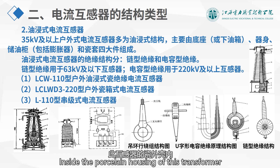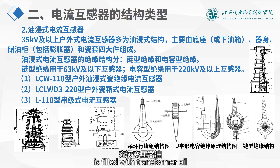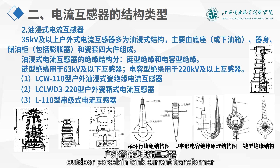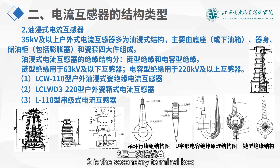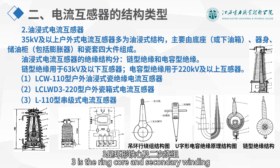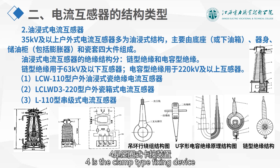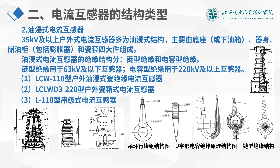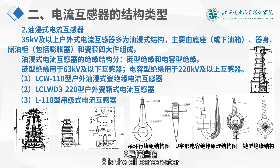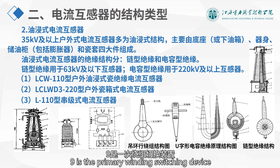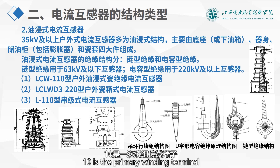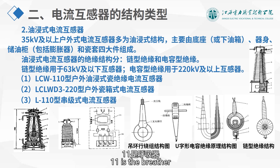Inside the porcelain housing, this transformer is filled with transformer oil and fixed on a metal carriage. The LCLWD3-220 type outdoor porcelain tank current transformer: 1 is the oil tank, 2 is the secondary terminal box, 3 is the ring core and secondary winding, 4 is the clamp type fixing device, 5 is the primary winding, 6 is the porcelain bushing, 7 is the grading shield, 8 is the oil conservator, 9 is the primary winding switching device, 10 is the primary winding terminal, and 11 is the breather.